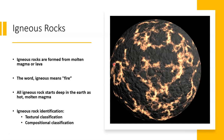To classify igneous rocks, we use textural classification and compositional classification. When we talk about texture, we're not necessarily talking about how the rock feels on the surface — it's going to be the size, shape, and arrangement of the grains, which will be the crystals on the rock. The composition will be what types of crystals and minerals we see in the rock.